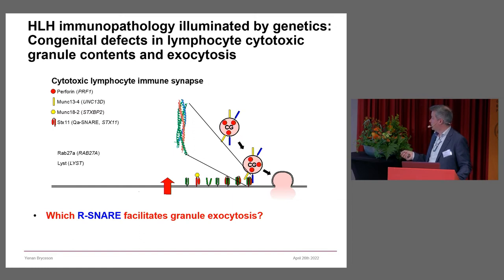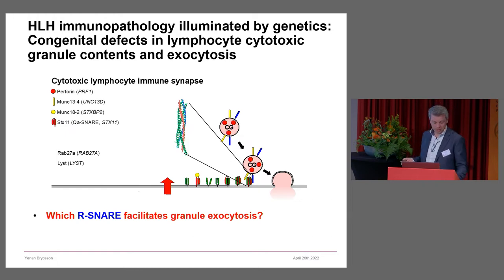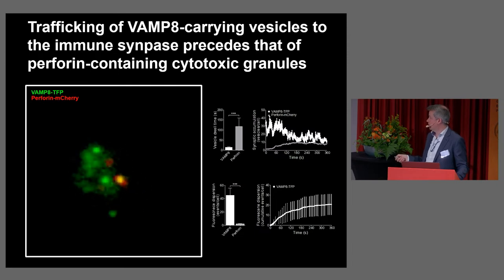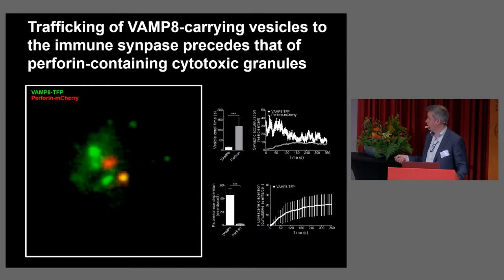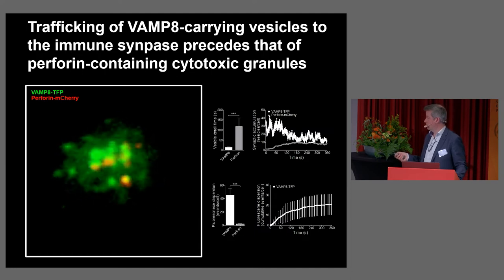One interest we had in the cell biology was which R-SNARE — which vesicular SNARE — teams up with the plasma membrane SNAREs to facilitate vesicle fusion. As we know from the central nervous system, one really needs this alpha-helix bundle to form and release a lot of energy for membrane fusion. This has been somewhat enigmatic, but one suggested candidate was VAMP8. We imaged VAMP8 and you can see these VAMP8 vesicles, quite numerous. Surprisingly, the perforin vesicles imaged separately in red were distinct from the VAMP8 vesicles, suggesting two different compartments.